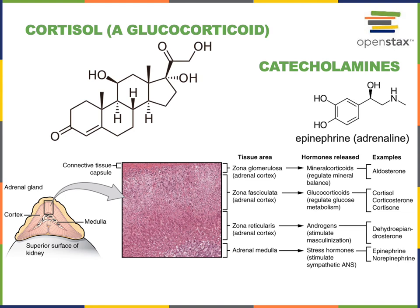There are three layers of the adrenal cortex. The superficial layer is the zona glomerulosa, which produces the mineralocorticoid hormone aldosterone, another steroid hormone. Aldosterone binds to receptors within cells in the kidney and stimulates the reabsorption of sodium, contributing to increased blood volume and blood pressure. The deepest layer of the adrenal cortex is the zona reticularis, which contains cells that produce androgen hormones, including dehydroepiandrosterone, abbreviated DHEA, which can stimulate masculinization effects by binding to the androgen receptor.